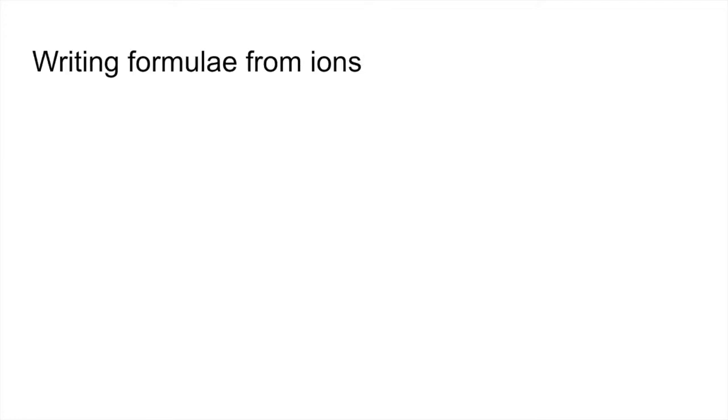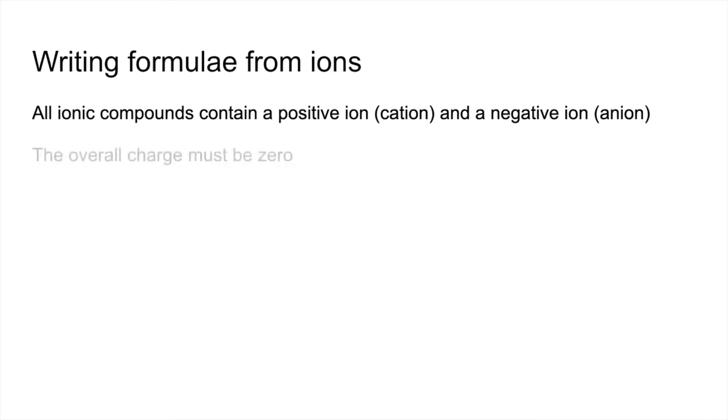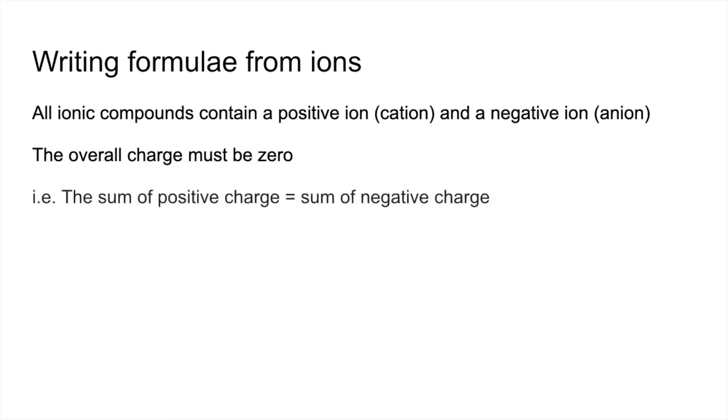So we'll just finish by explaining how to write the formulae from ions. So these are the formulae of ionic substances. So all ionic compounds contain a positive ion, that's what we call a cation, and a negative ion, an anion. The overall charge of the compound has to be zero. So in other words, the sum of the positive charge must equal the sum of the negative charge.